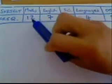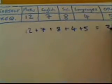So the first thing we want to do is add up the total number of students. We want to see how many students were actually surveyed. 12 plus 7 plus 8 plus 4 plus 5 adds up to a total of 36.